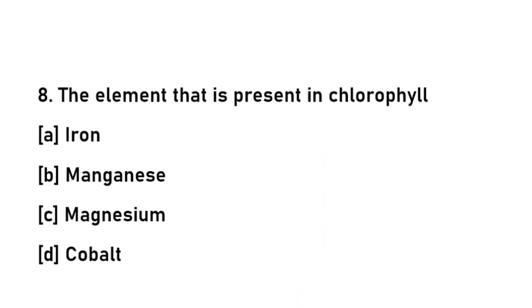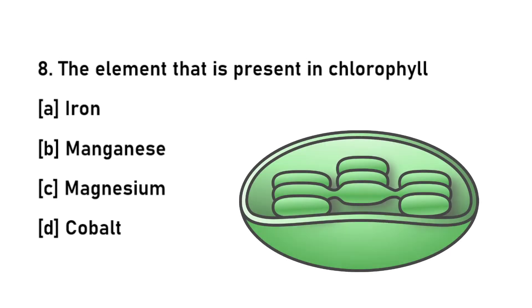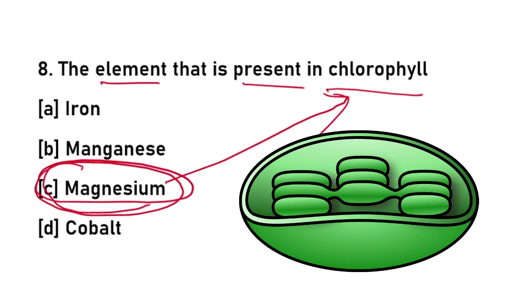Eighth question: the element present in chlorophyll is magnesium (Mg) — not manganese.